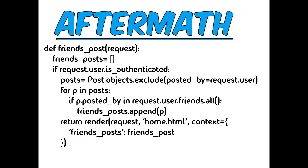Here's a quick example of a friends_posts function. It gets posts from the current user's friends. An empty list friends_posts is created. If the user is authenticated, posts are fetched excluding those by the current user. A for loop checks if p.posted_by is in request.user.friends — if so, those posts are appended to friends_posts and rendered. It's a basic example, not perfect.